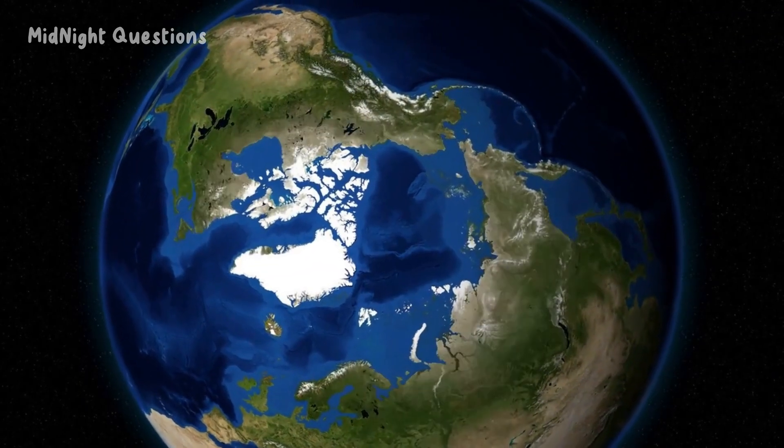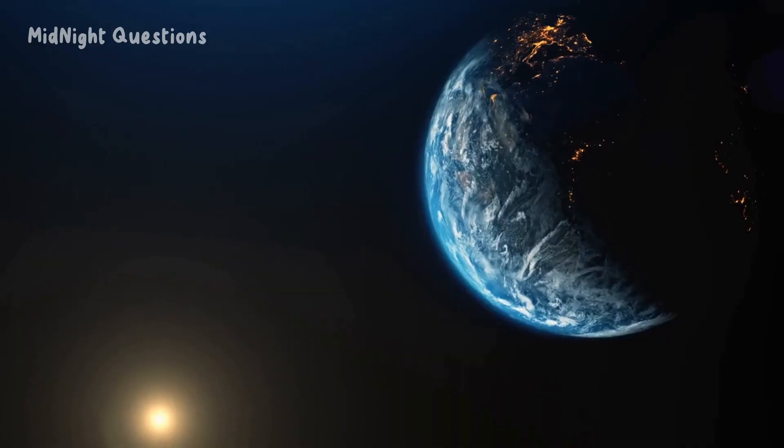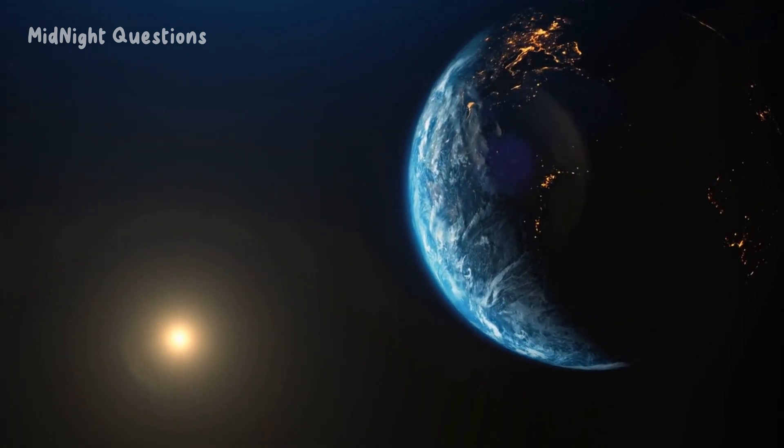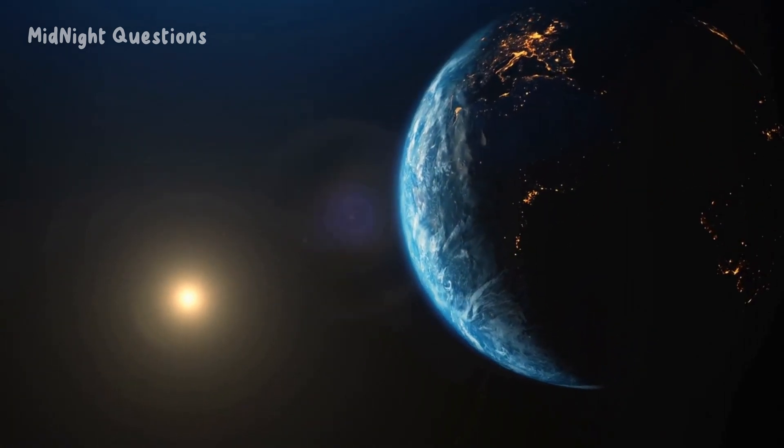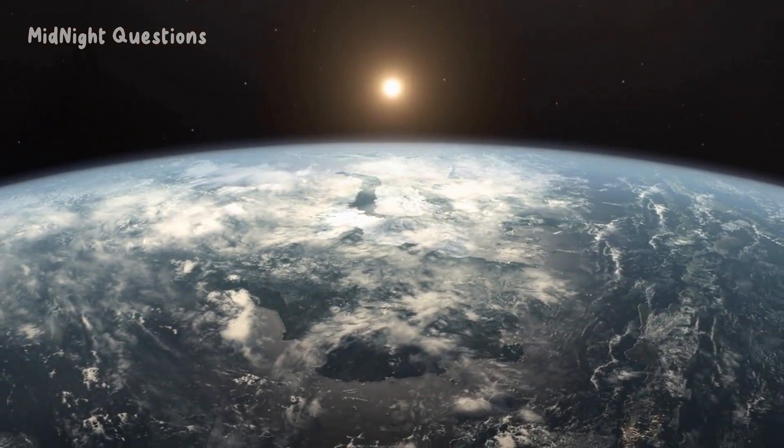One of the most significant changes that would occur over the next billion years is the evolution of life on Earth. If life does continue to exist, it will have undergone significant changes in adaptation to the changing environment. Species that are currently thriving may become extinct, while new ones could emerge.